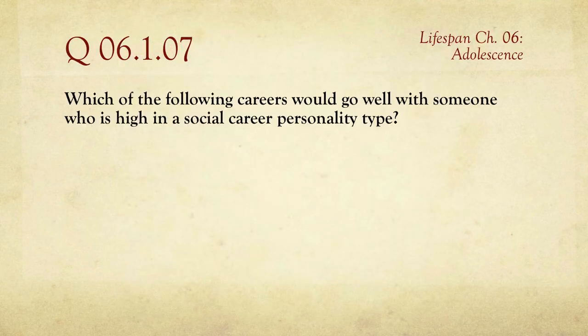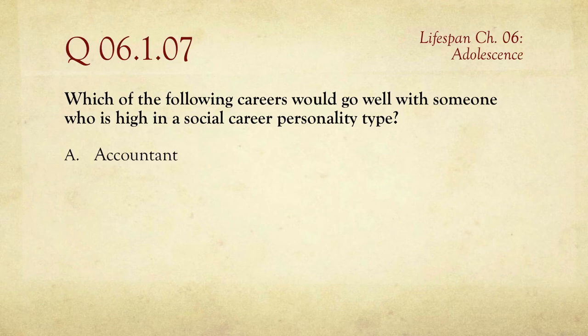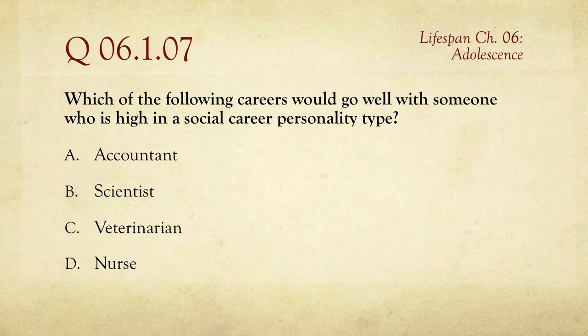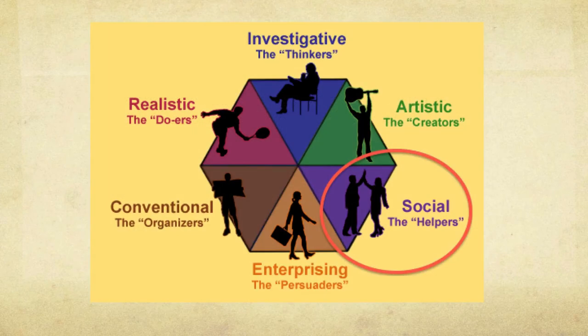Question number seven: which of the following careers would go well with someone who is high in the social career personality type, based on the Holland Survey? The choices are accountant, scientist, veterinarian, or nurse. The social type among these — the one that works best — is nurse. Social types are the helpers, especially those who like helping other people, so nurse definitely falls into that category.